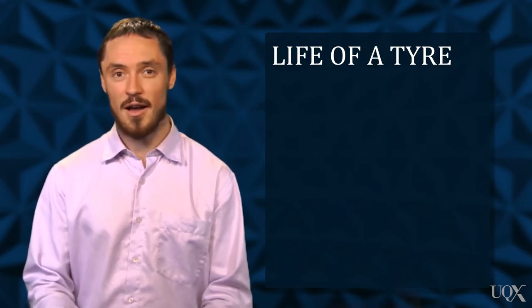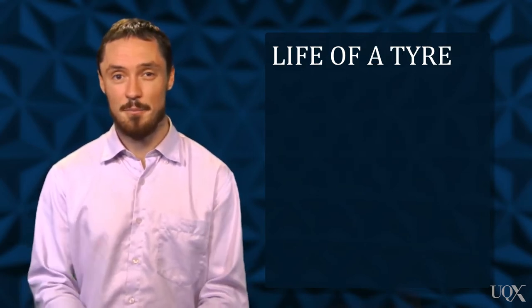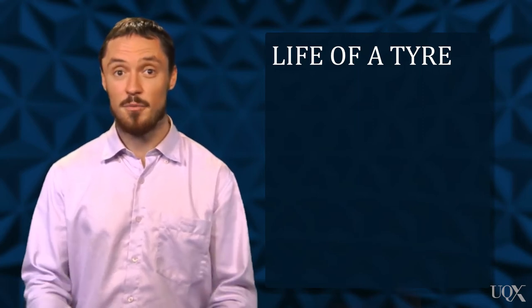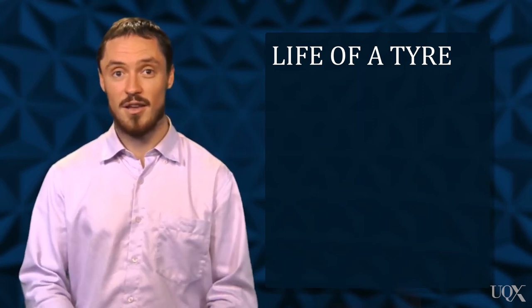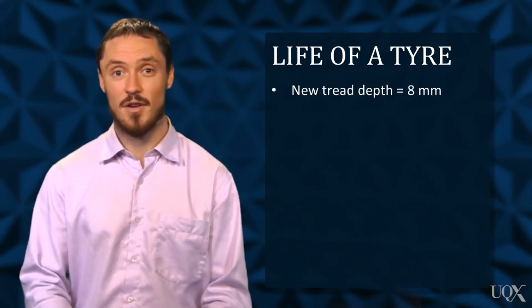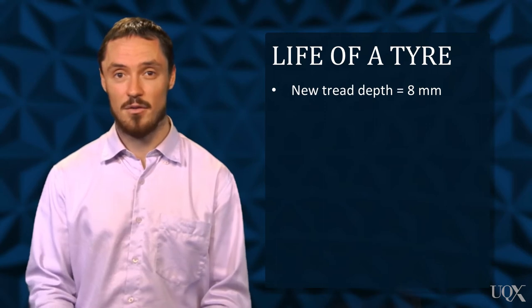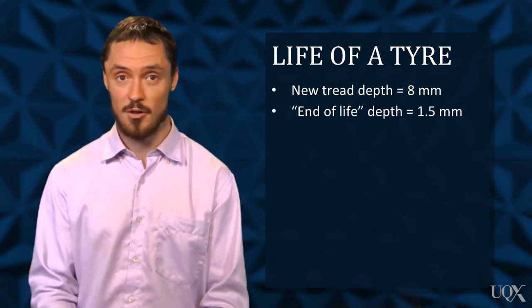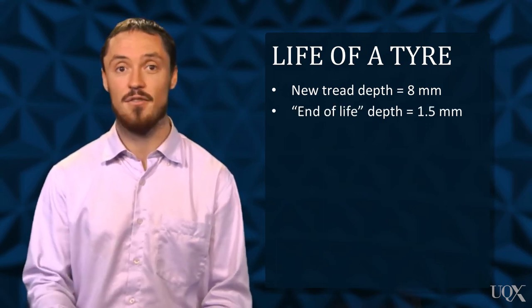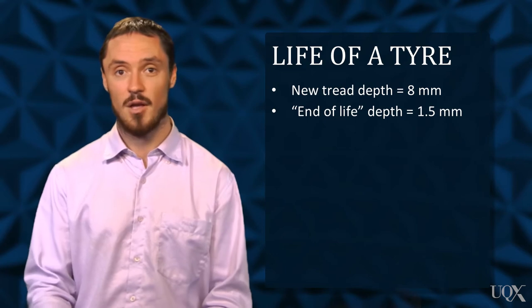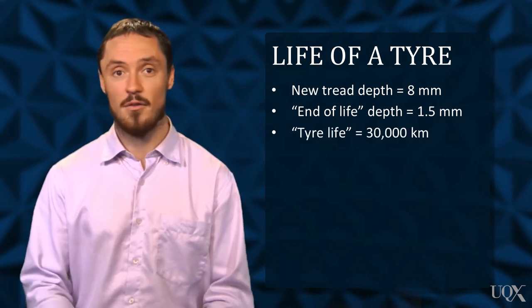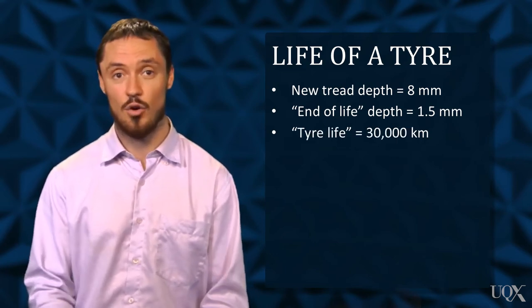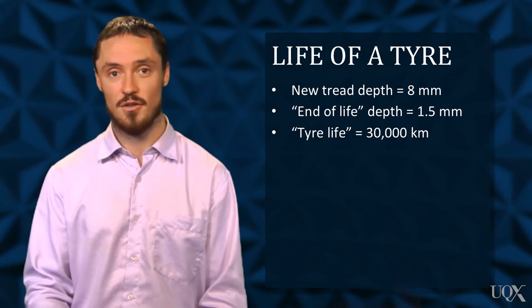The life of a tire is determined by minimum legal tread depth. Most passenger cars have a tread depth of 8mm when new and go down to 1.5mm at the end of their life. Most tires will last for 30,000km under normal driving conditions.